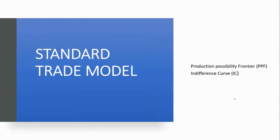The standard trade model can be used to talk about trade on the basis of differences in resources. We can also explain trade on the basis of differences in technology. So both of these can be addressed here.